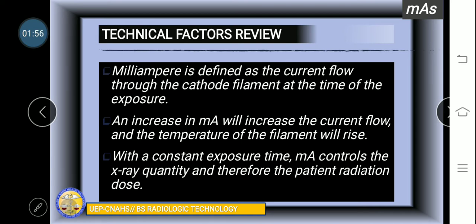We said that an increase in MA will increase the amount or the current flow and the temperature of the filament will rise. Remember class that there is the phenomenon we termed thermionic emission. This is the emission of electrons by application of heat. Therefore, an increase in MA will increase current flow and the temperature of the filament will also rise, increasing the emission of electrons.